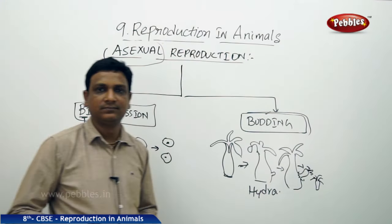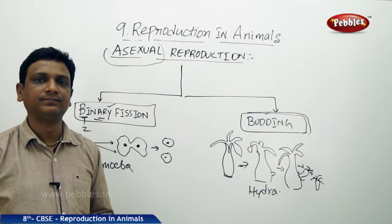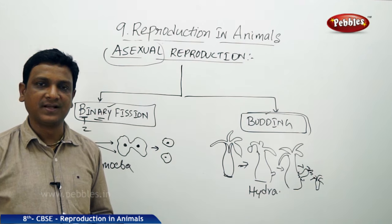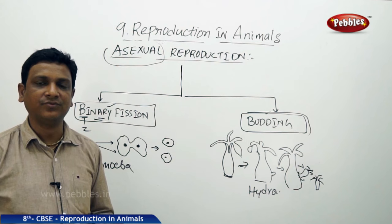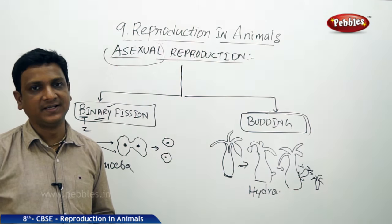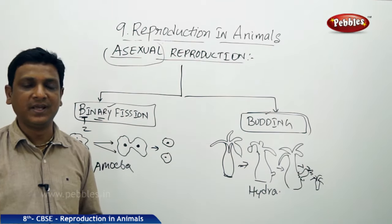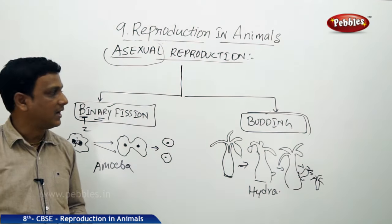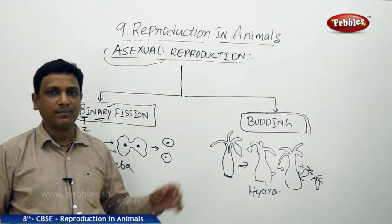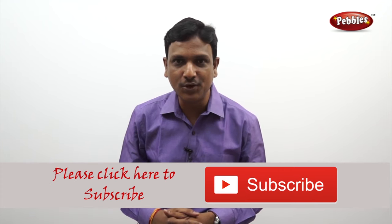In this lesson, we have learned many things about reproduction in animals: how animals reproduce, different modes of reproduction including sexual and asexual reproduction. Under sexual reproduction, we learned about gametes, zygote, fertilization, internal and external fertilization with examples, and how the zygote develops into babies through different modes. Finally, we covered asexual reproduction — binary fission in amoeba and budding in hydra. If you like this video, please give a thumbs up and subscribe to our channel for more videos on the CBSE syllabus.